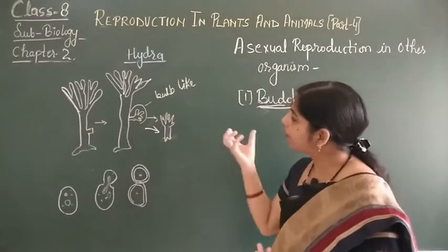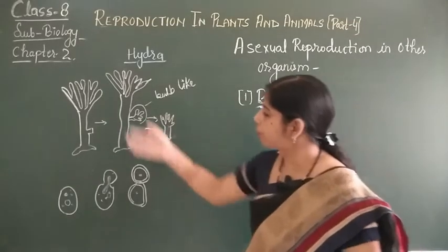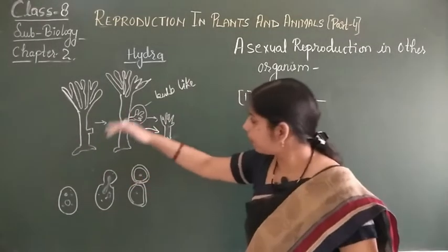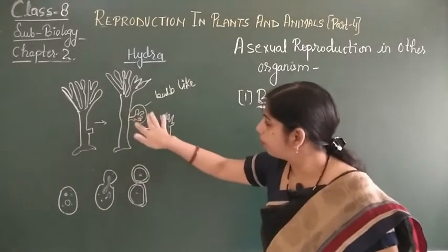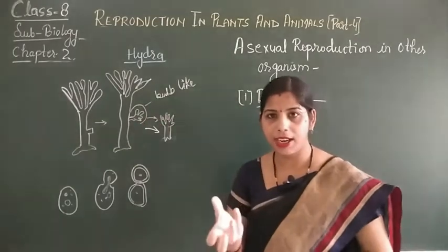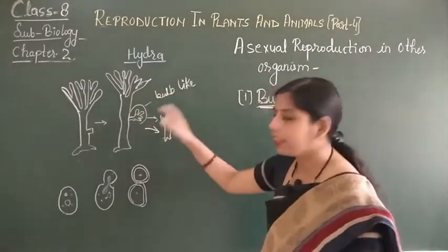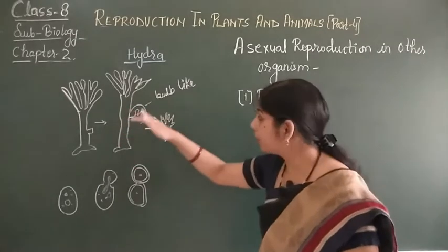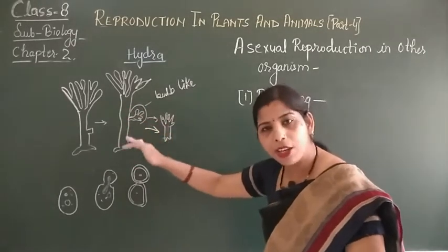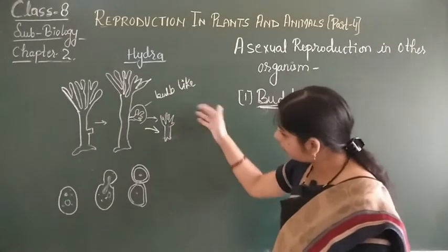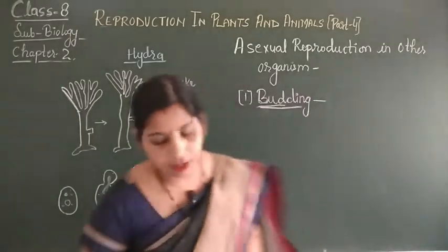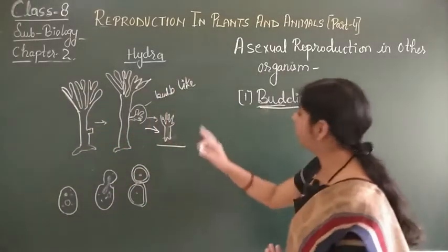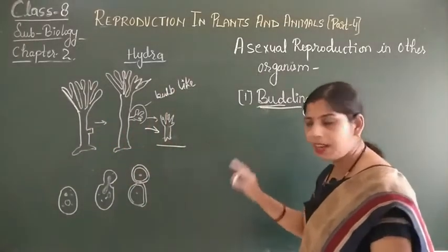In this process, one bud-like structure arises over the body of the organism, and after some time that bud-like structure, which we call the bud, is detached from the parent organism and forms a new individual. This is the parent organism, and the bud separates from it. This is how budding occurs in Hydra.